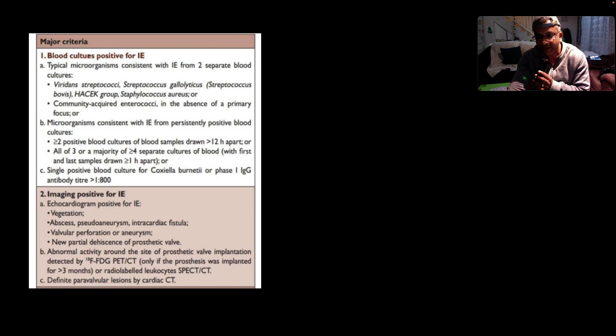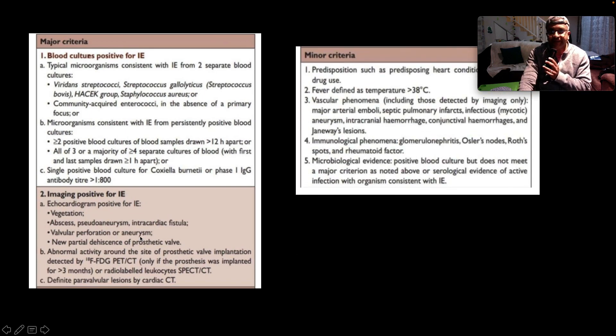Imaging criteria, looking at the echo. Normally we have transthoracic echo available to us, but transesophageal echo is much more sensitive. What we're looking for is vegetations, abscess or pseudoaneurysm or intracardiac fistula, valve perforation or aneurysm, new partial dehiscence of a prosthetic valve. You can also have criteria on the FDG PET scan and cardiac CT as outlined.